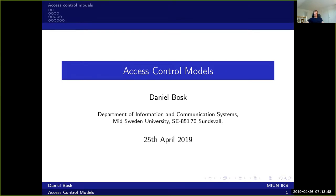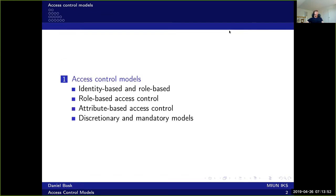Now we're going to talk about access control models. An access control model specifies how we do access control. We are going to talk about several: identity-based access control and role-based access control. In identity-based access control, we have the identity which is tied to the access rights and the operations, whereas in role-based access control, you have a role which is tied to access rights and operations.